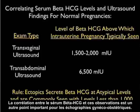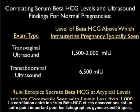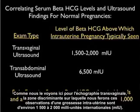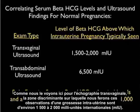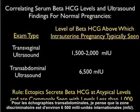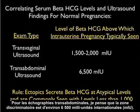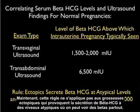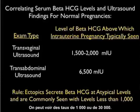Another important concept for OBGYN sonography is the correlation of the serum beta HCG to the findings of a normal pregnancy. For transvaginal sonography, the discriminatory zone at which we will see findings of an intrauterine pregnancy is about 1,500 to 2,000 milli-international units. For transabdominal sonography, the discriminatory zone is about 6,500 milli-international units. This rule does not apply to ectopic pregnancies, which secrete beta HCG at atypical levels — they can be seen with betas lower than 1,000 and as high as 30,000.